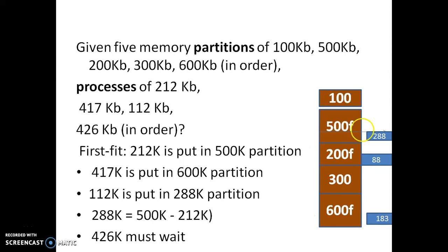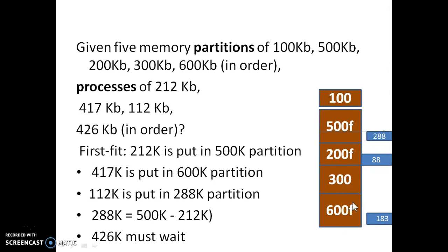The 300 KB block is not sufficient for P4's 426 KB request, and the remaining blocks have only 88 KB, which is also not sufficient. So P4's request of 426 KB must wait until processes P1, P2, or P3 release their resources, making memory available for the remaining process. This is how memory allocation works for the particular processes using first fit.